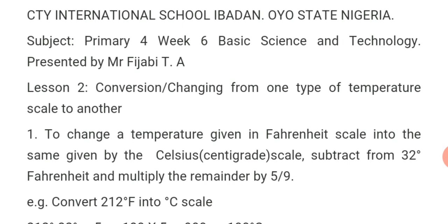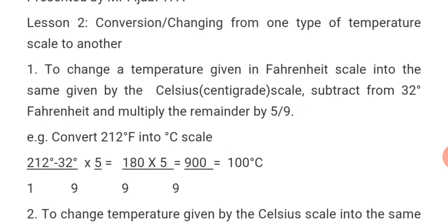Now, conversion or changing from one type of temperature scale to another. To change a temperature given in Fahrenheit scale into the Celsius or centigrade scale, you have to subtract 32 degrees Fahrenheit from the given value and multiply the remainder by 5 over 9.